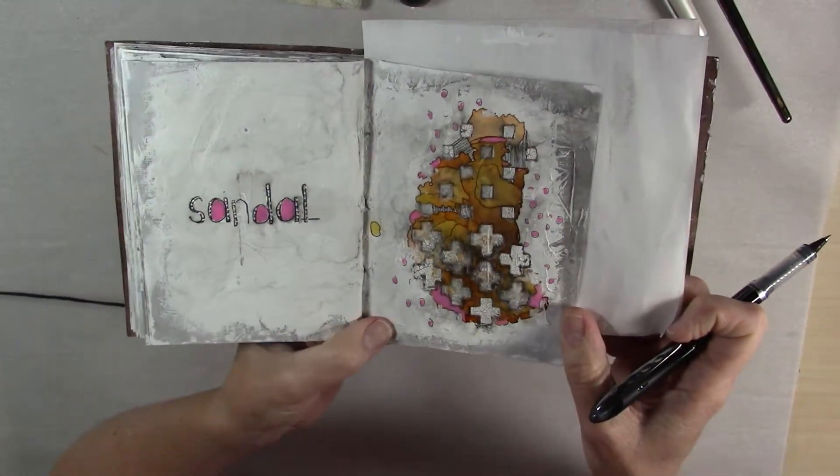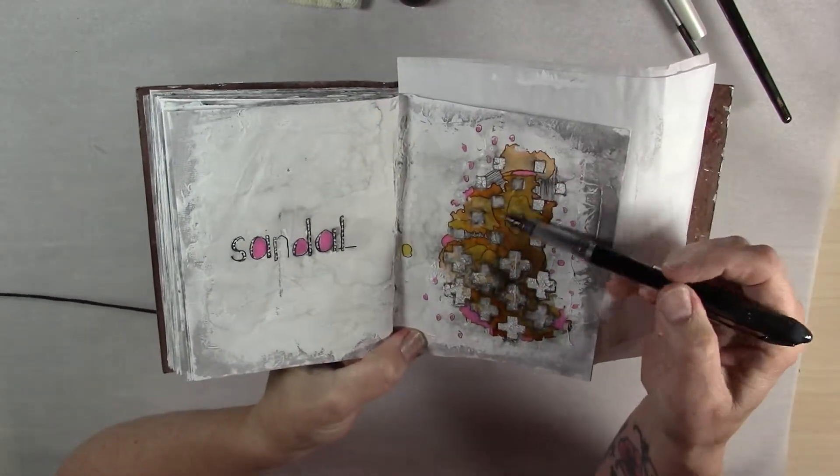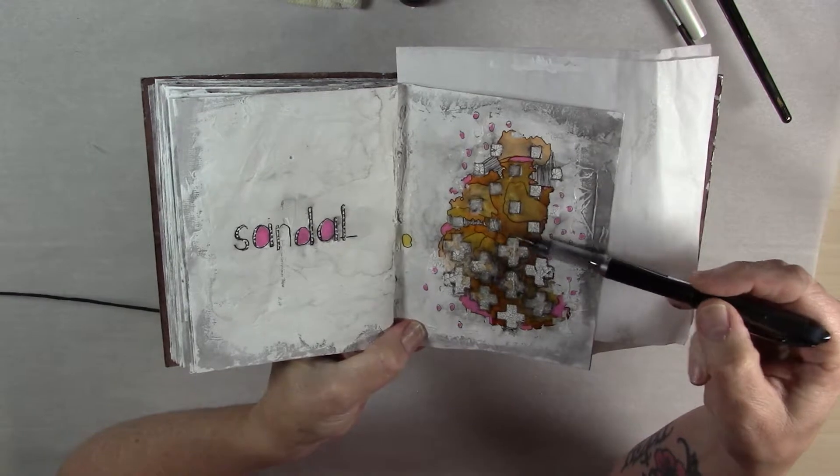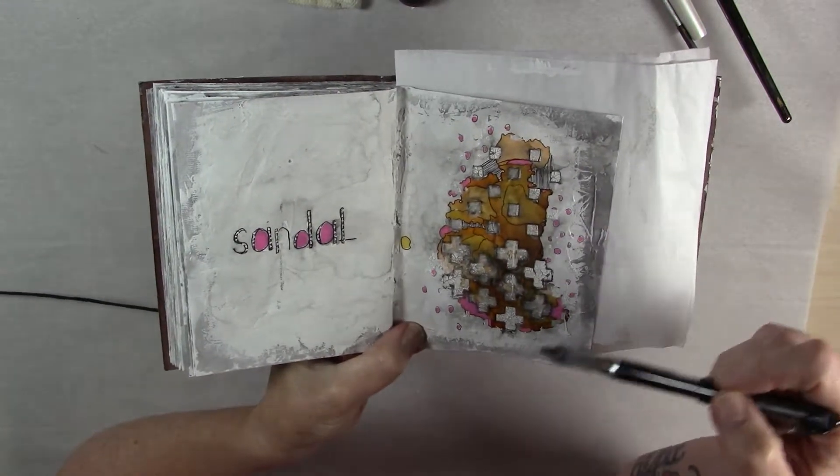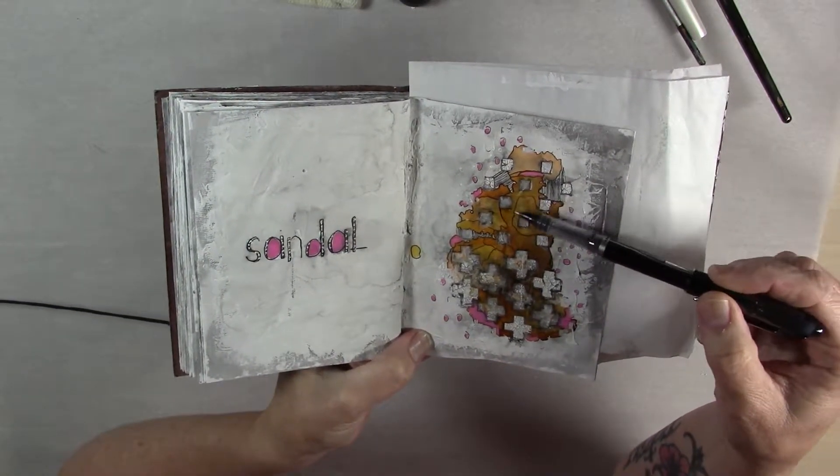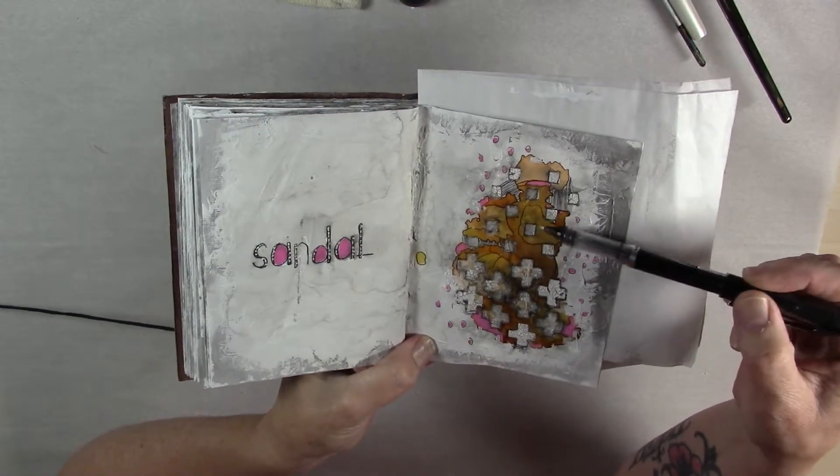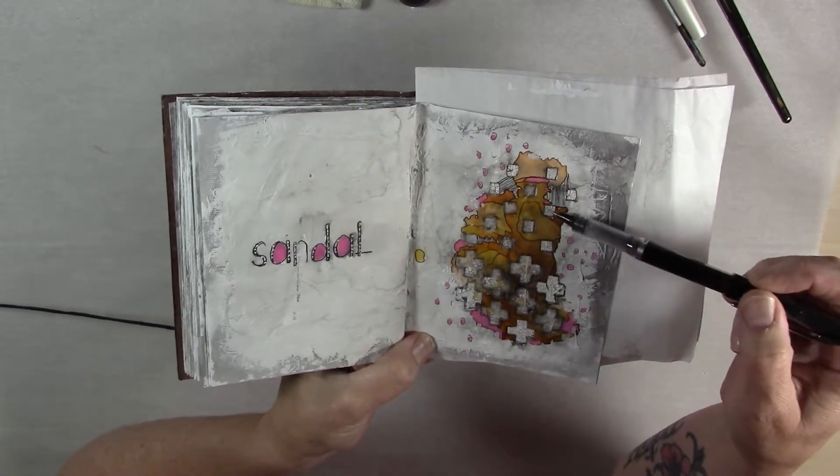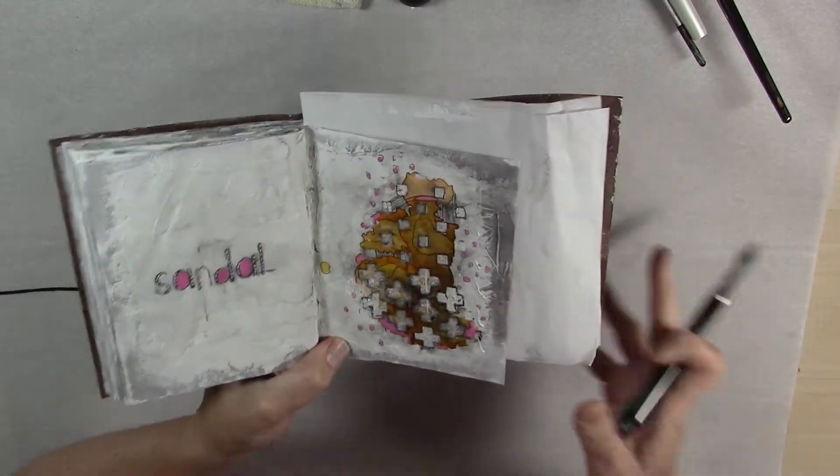So you can see on this page here I've used the shapes of the alcohol ink spots as the basis for the design. And then you'll see where there's different color variations on each one of these spots, I've drawn on those pages as well.